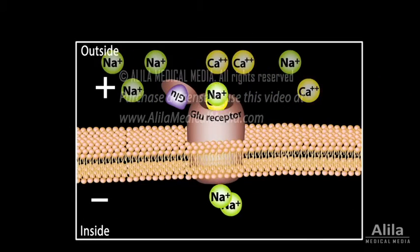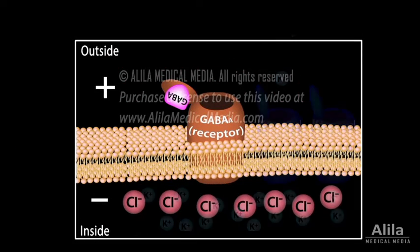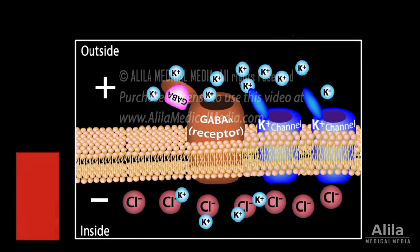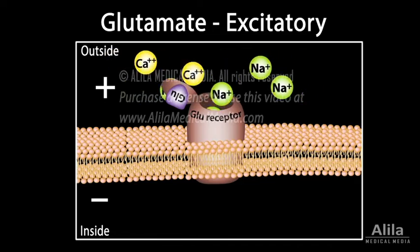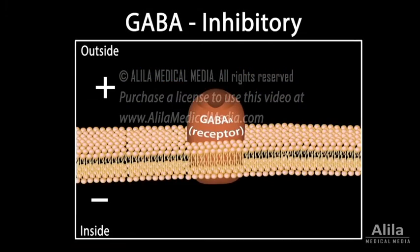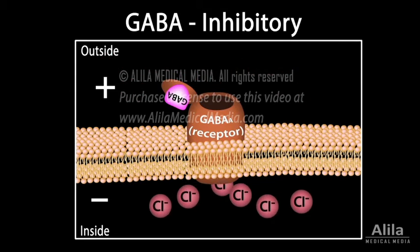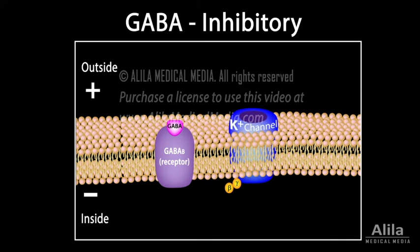Typically, excitation is mediated by sodium or calcium influx, while inhibition is a result of chloride influx or potassium efflux. The major excitatory neurotransmitter in the brain is glutamate. Glutamate receptors are ion channels that allow influx of sodium and calcium when activated. The major inhibitory neurotransmitter is GABA. Some GABA receptors are chloride channels — upon binding to GABA, they open to allow inward flow of chloride. Some other GABA receptors act through a G protein to activate potassium channels, permitting outward flow of potassium.